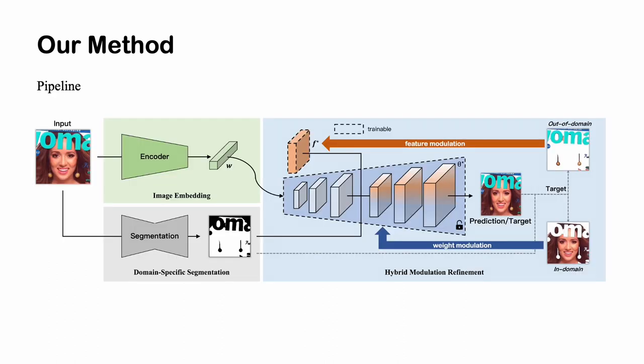Here's the pipeline of our method. The image embedding module aims to embed images into latent codes, which we use an off-the-shelf encoder like E4E to predict. Then we propose a domain-specific segmentation to predict a binary mask to distinguish in-domain and out-of-domain areas. In-domain refers to areas that have a similar distribution to the generator's output space, which makes them easy to invert.